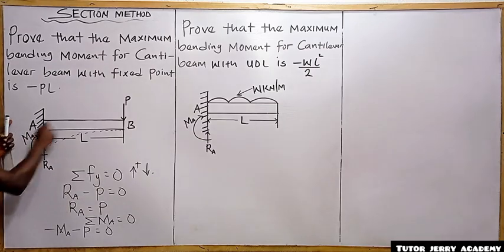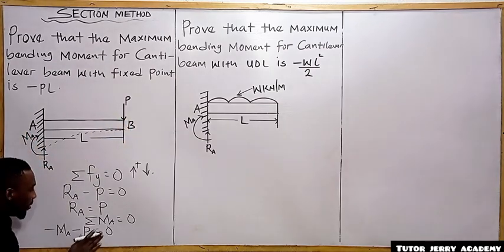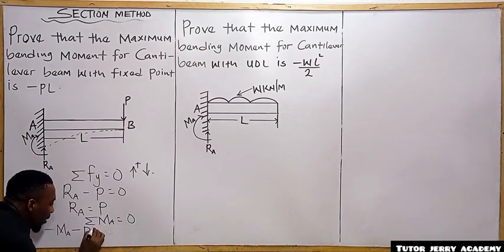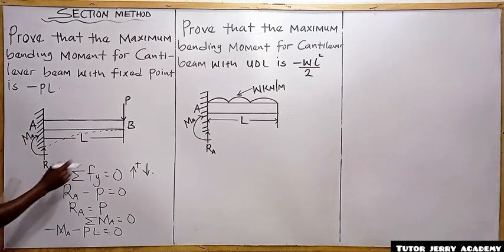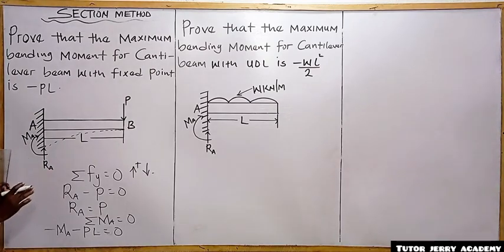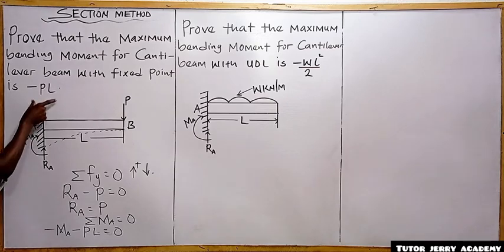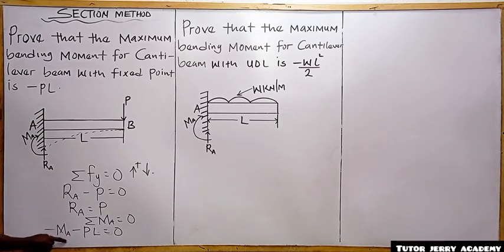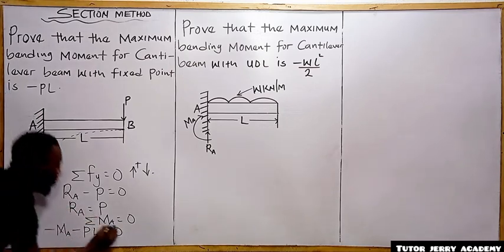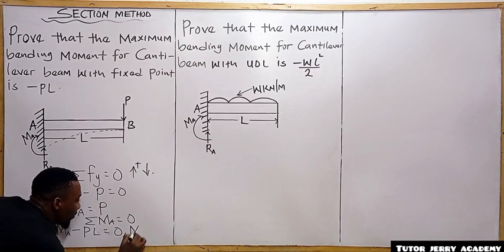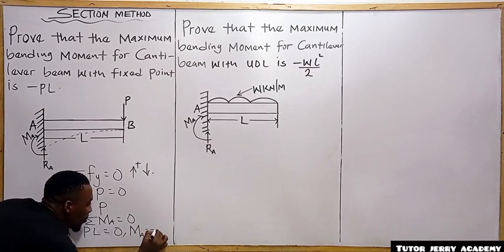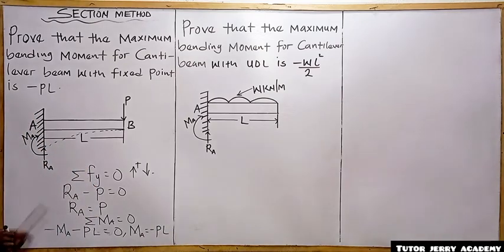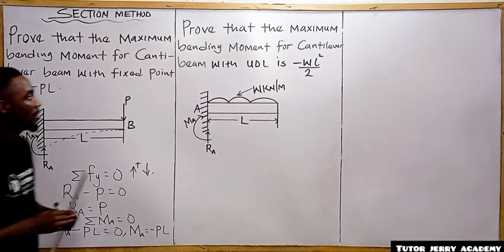Taking the moment about point A gives us P multiplied by L. So we have: minus M_A minus PL equals zero. Moving M_A to the other side, we get M_A equals minus PL. This proves that the maximum bending moment for the cantilever with a point load is negative PL.